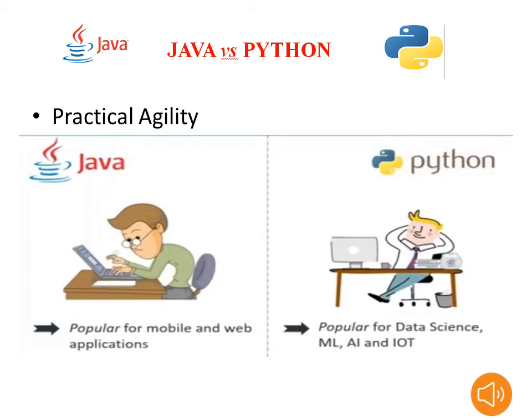Regarding practical agility: Java is popular for mobile and web applications. Python is popular for data science, machine learning, artificial intelligence, and IoT. These are the advanced and nowadays popular technologies — data science, machine learning, AI, IoT, and blockchain. For this criterion, I vote for Python. So now we have two votes for Java and three votes for Python.